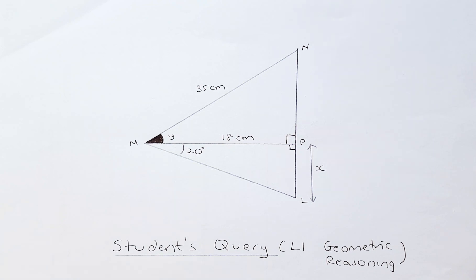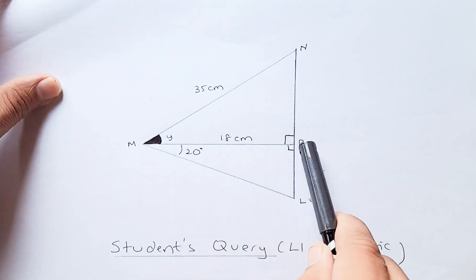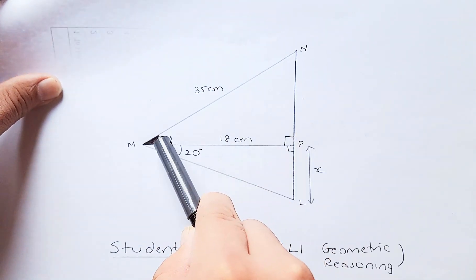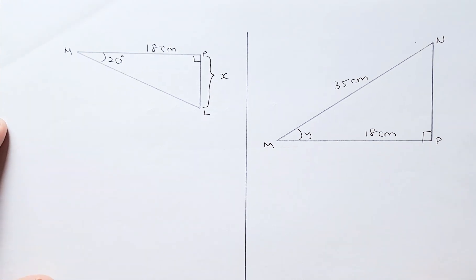we need to break them down into two different triangles, then we can solve it quite easily. If not, it's quite confusing. So what we are going to do is make it MPN, calculate X, and then use MPN to calculate the angle Y. So we have to do it down here. So now we have broken them down into two separate triangles.